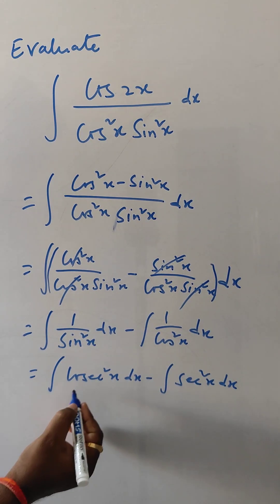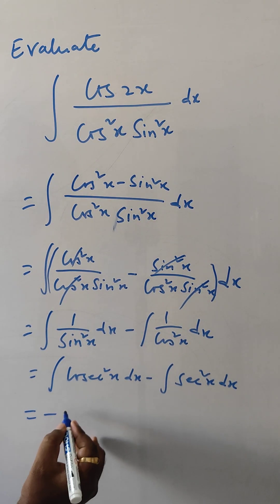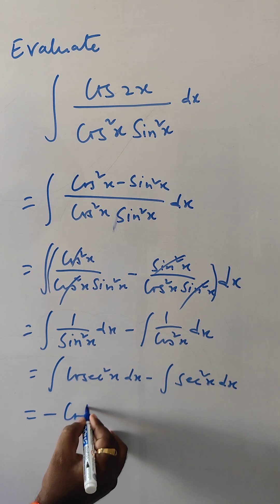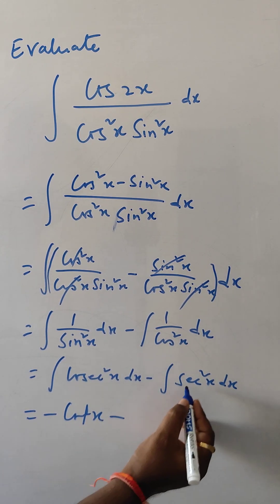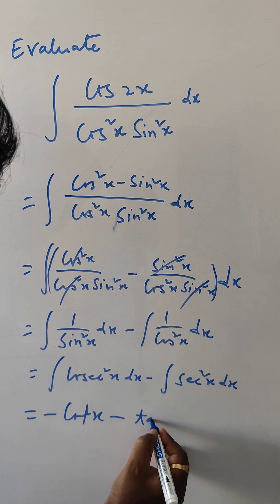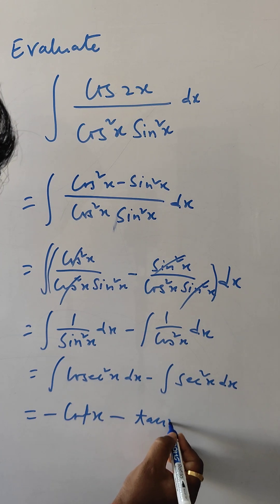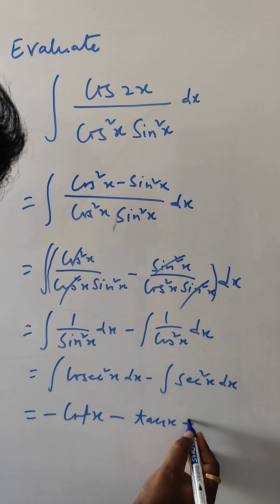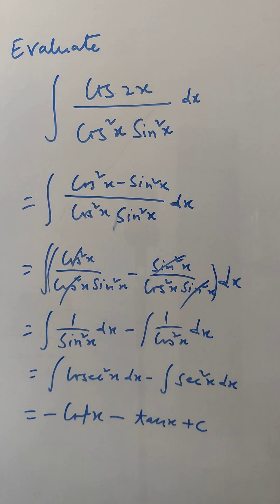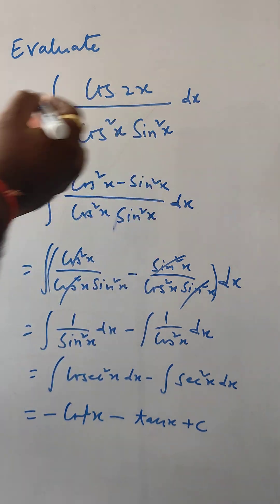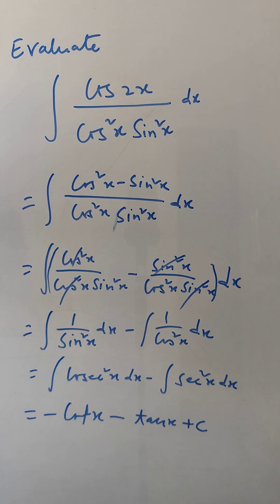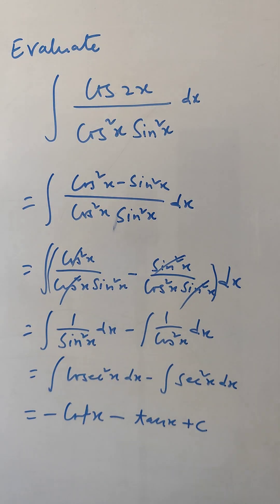So this simplifies to cos²x minus cos²x, and here this gives tan x plus C. So this is the answer to this problem. Thank you for watching — please like and subscribe.